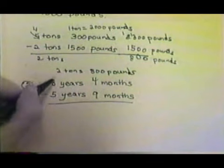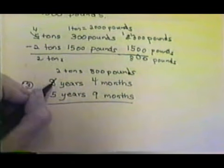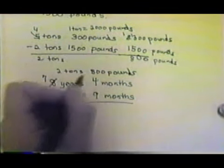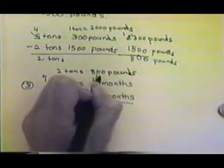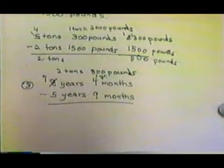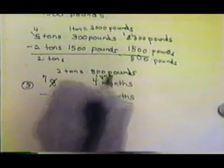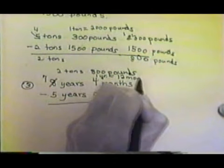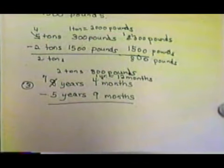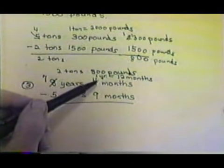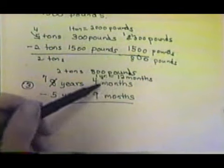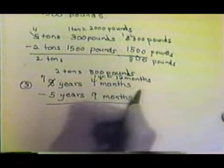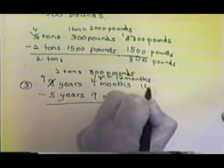So we have to come over here to the years — the 8 years — and borrow a year. That leaves us with 7 years. When I borrow that one year, that one year is made up of months, and I have to know how many months I'm getting. One year is equal to 12 months, and I already had 4 months, so I'm going to put the 4 and the 12 together and write 16 months.